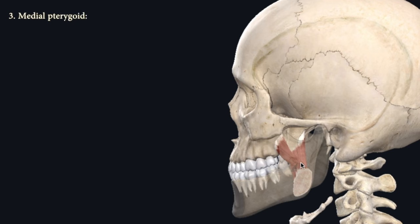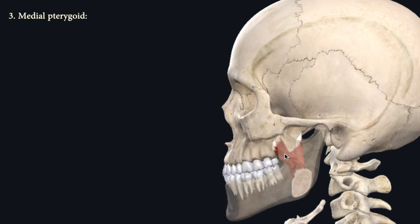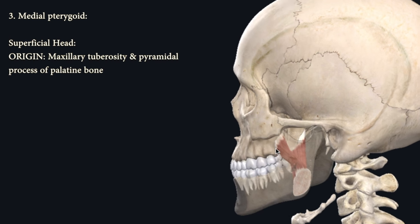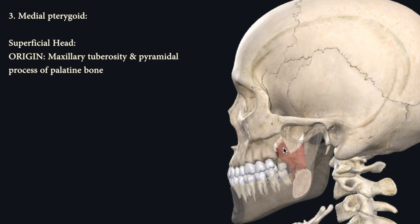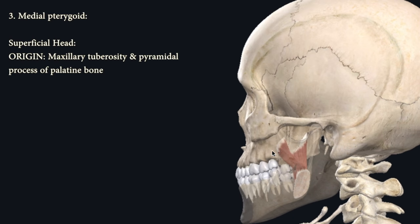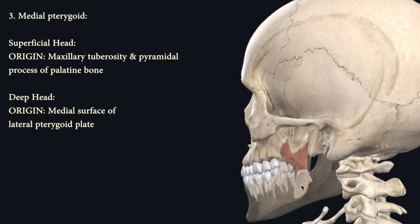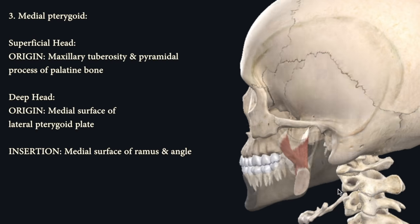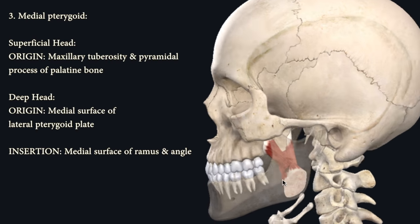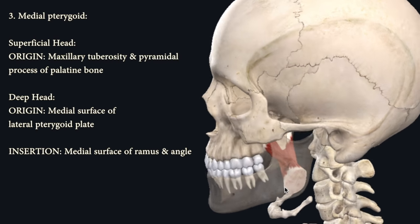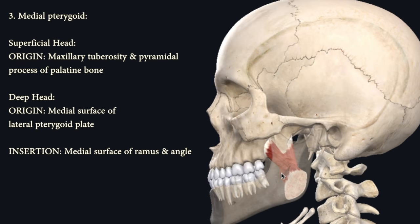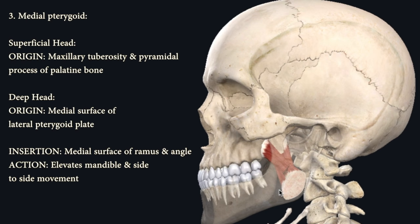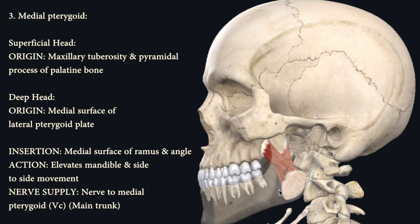Number three is the medial pterygoid, which divides into two parts: the superficial head and the deep head. The superficial head originates from the maxillary tuberosity and pyramidal process of the palatine bone, and the deep head originates from the medial surface of the lateral pterygoid plate. Both heads insert into the medial surface of the ramus of the mandible, partly inserting into the angle as well. Its action is elevation of the mandible and side-to-side movement, and its nerve supply comes from the main trunk of the mandibular nerve.